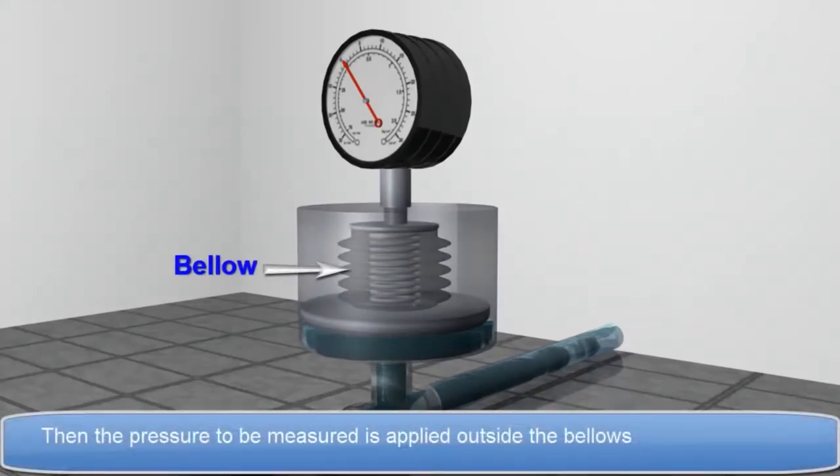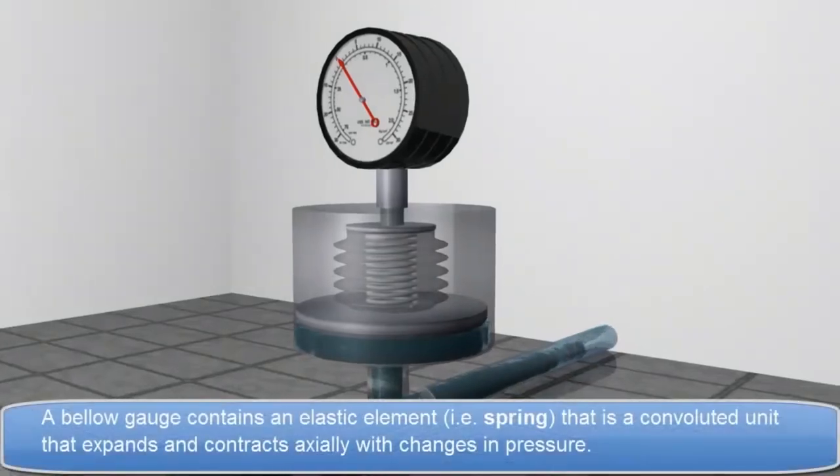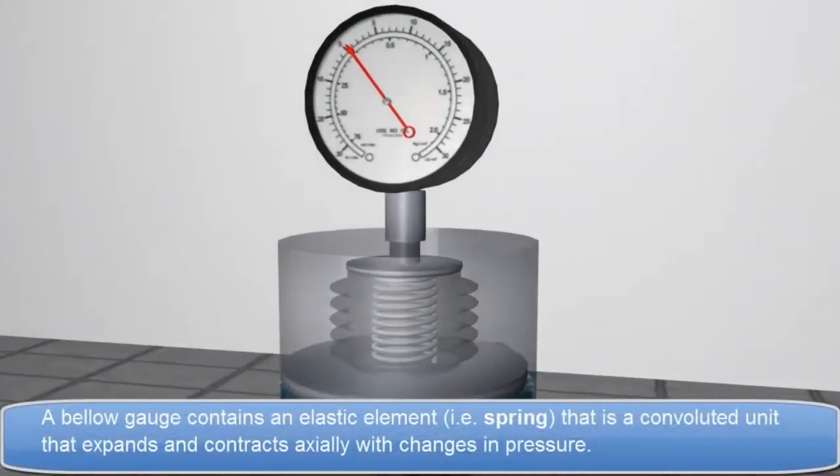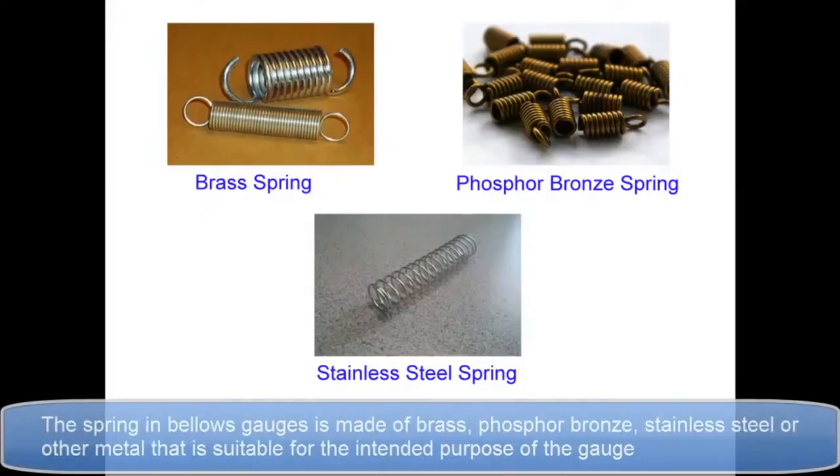Then the pressure to be measured is applied outside the bellows. A bellow gauge contains an elastic element, i.e. spring, that is a convoluted unit that expands and contracts axially with changes in pressure.